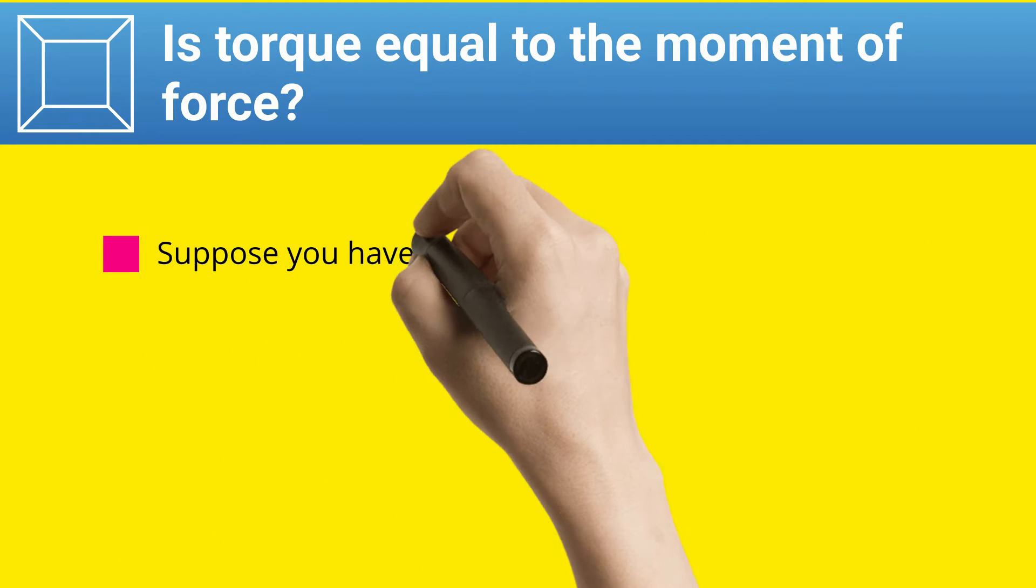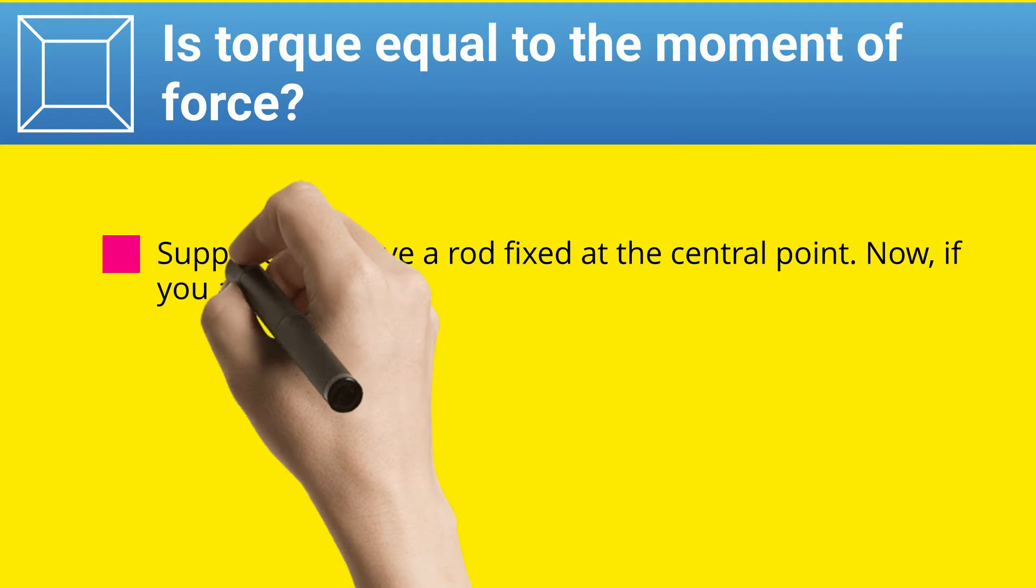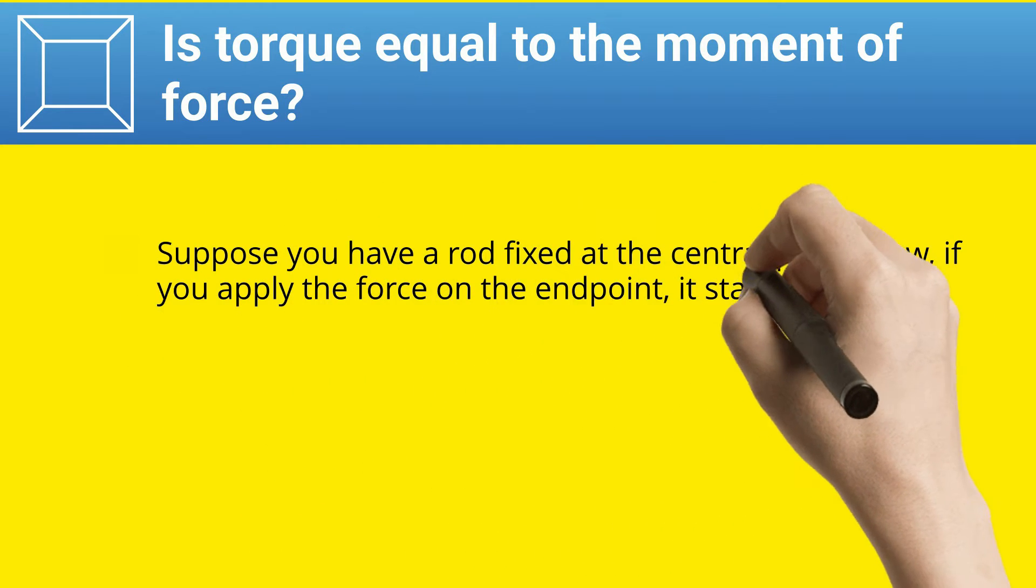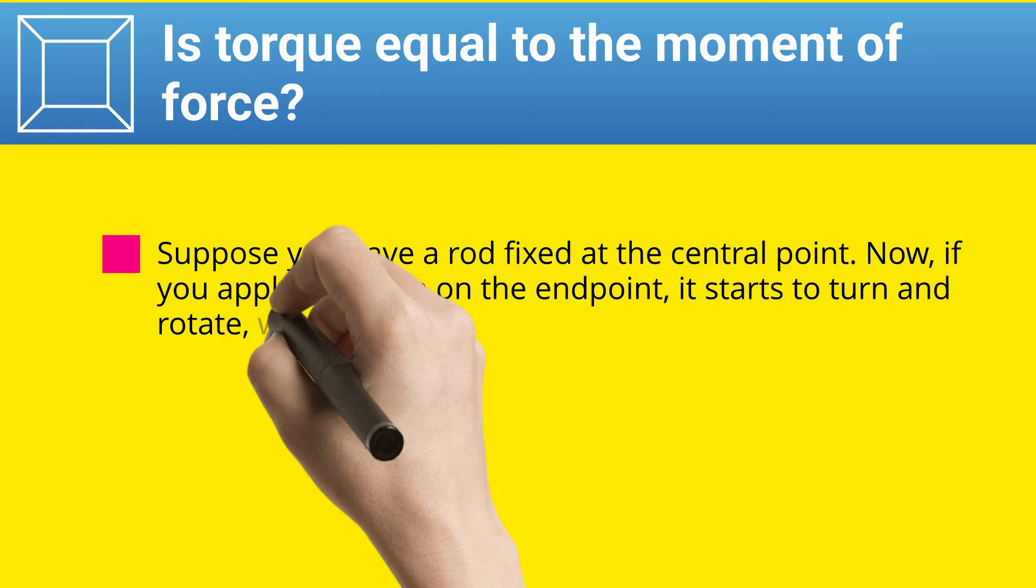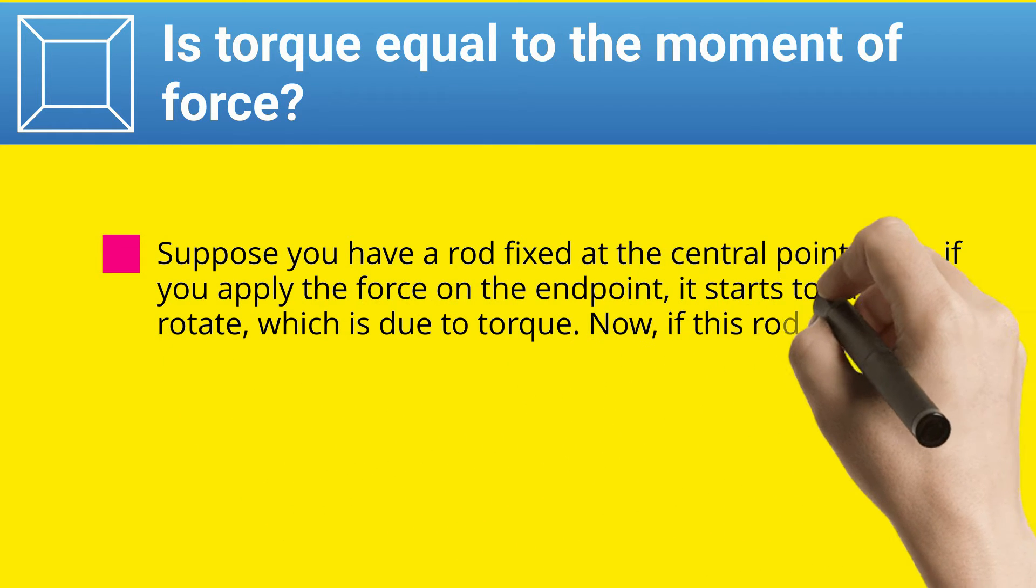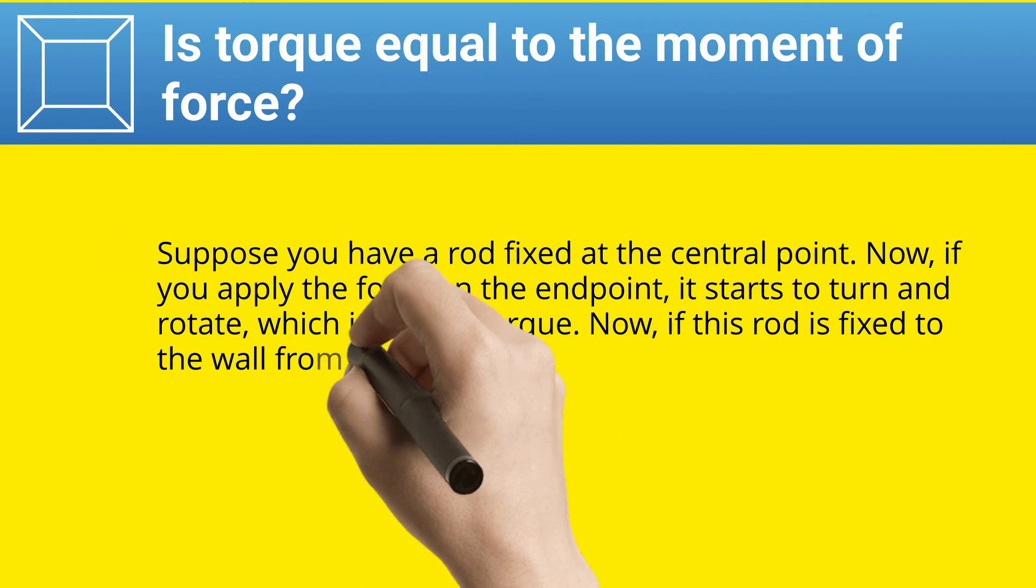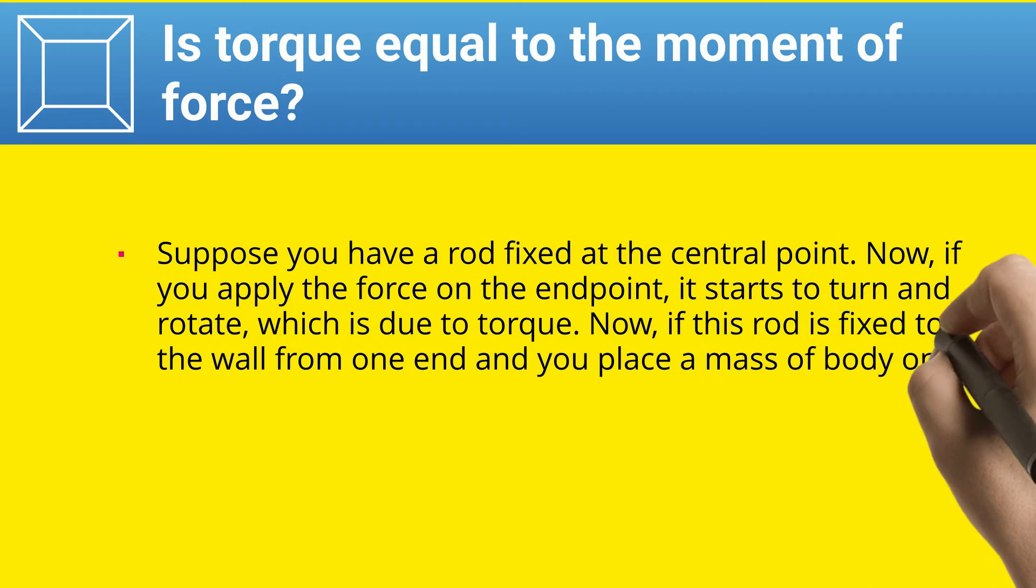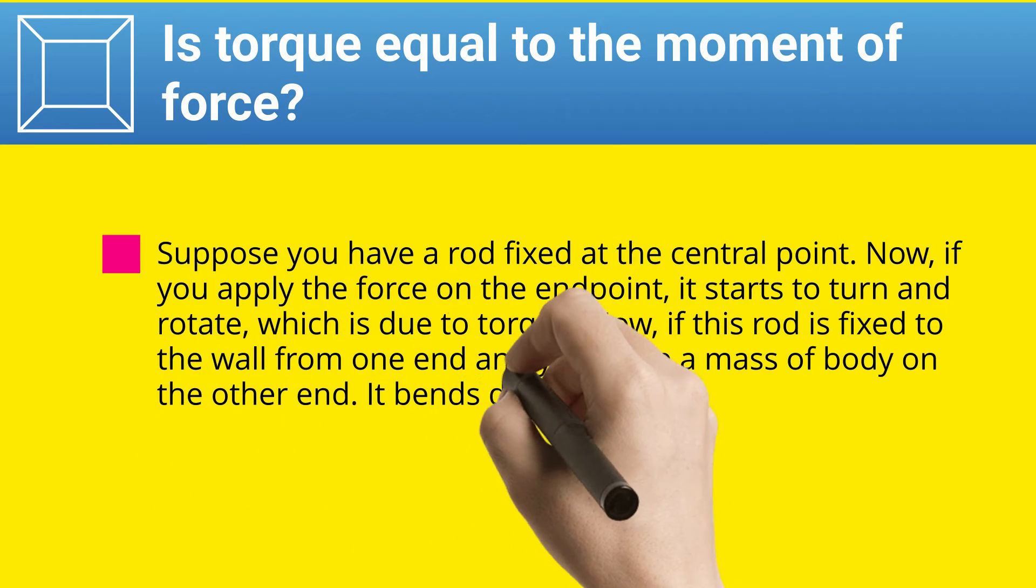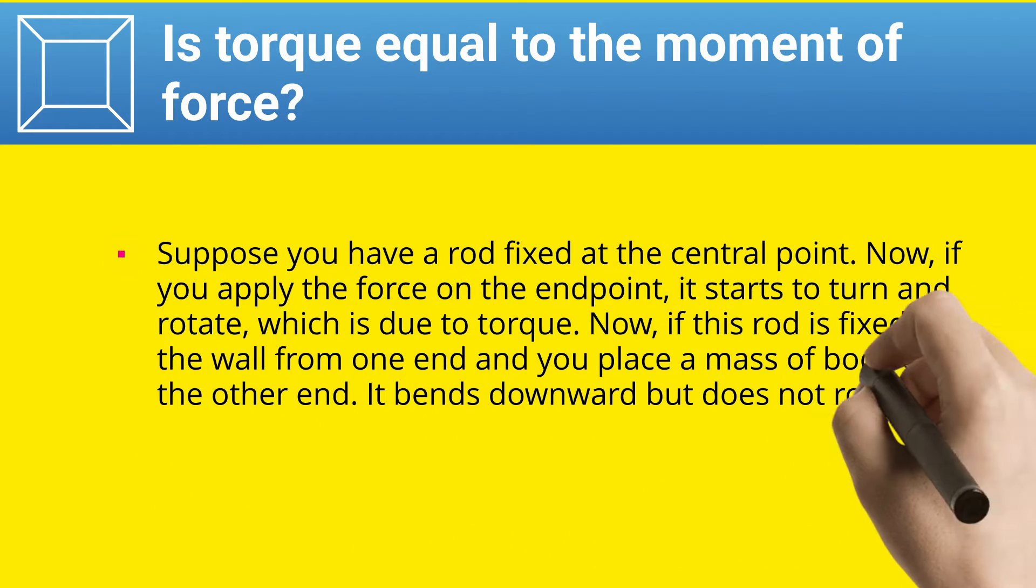Suppose you have a rod fixed at the central point. Now, if you apply the force on the endpoint, it starts to turn and rotate, which is due to torque. Now if this rod is fixed to the wall from one end and you place a massive body on the other end, it bends downward but does not rotate. It is the moment.